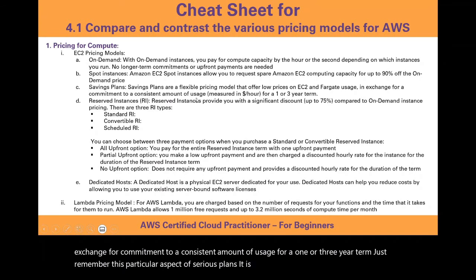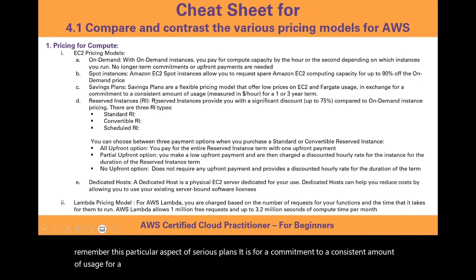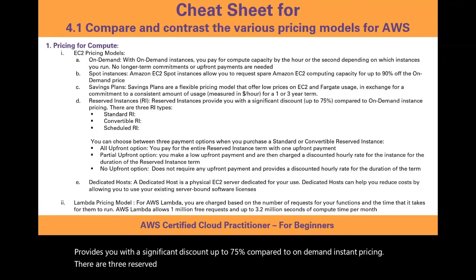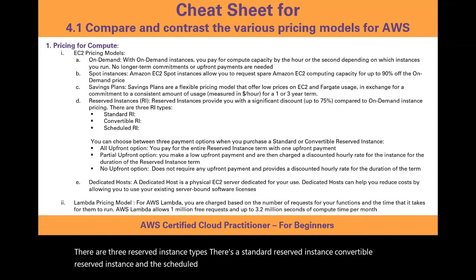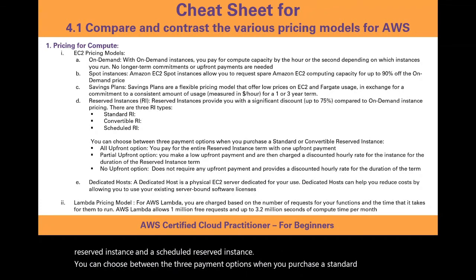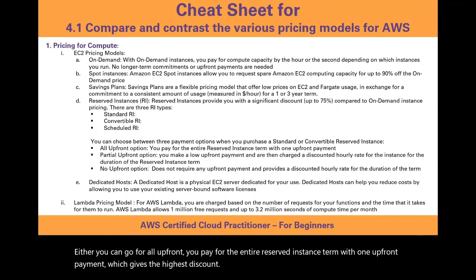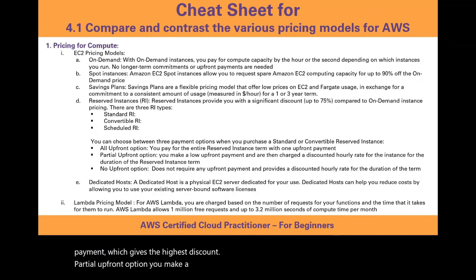Reserved instances provide a significant discount — up to 75% — compared to on-demand pricing. There are three reserved instance types: standard, convertible, and scheduled. When purchasing a standard or convertible reserved instance, you can choose from three payment options: all upfront (highest discount), partial upfront (low upfront payment plus discounted hourly rate), or no upfront.